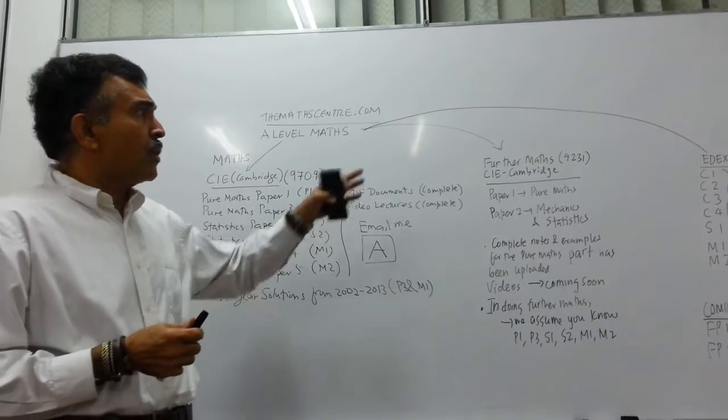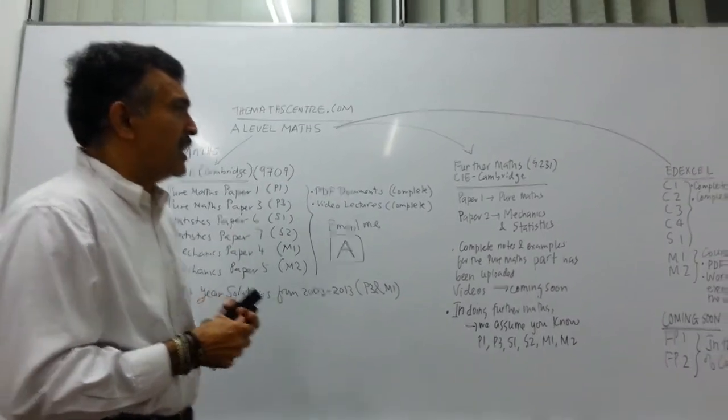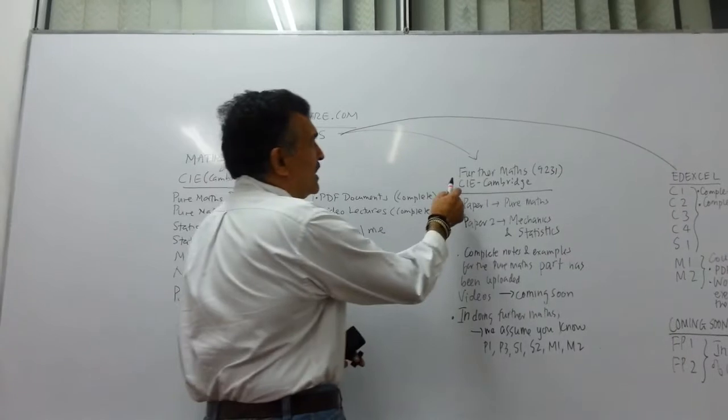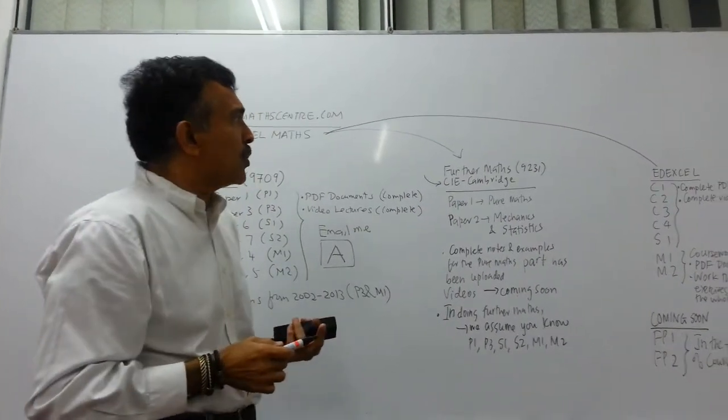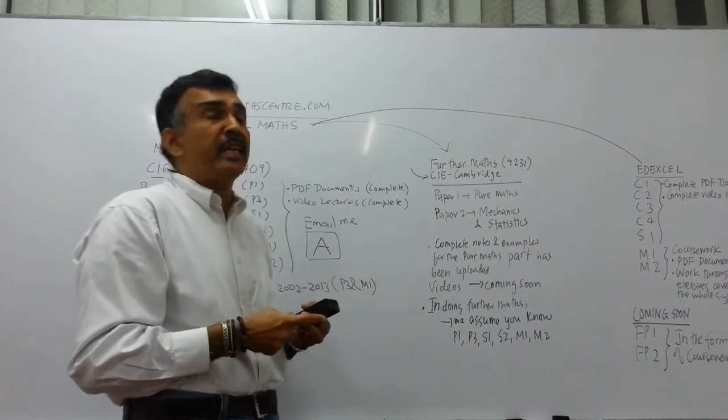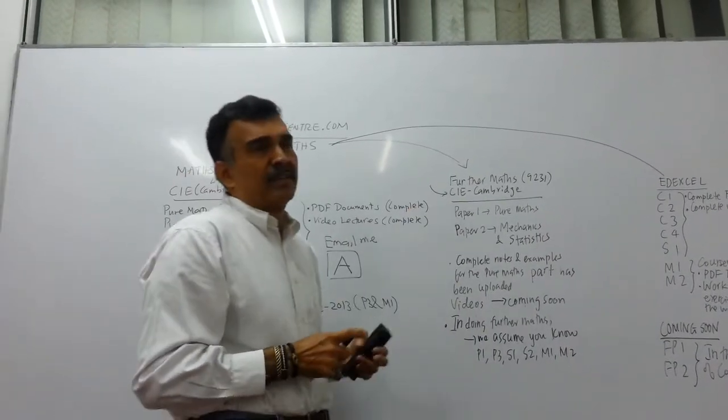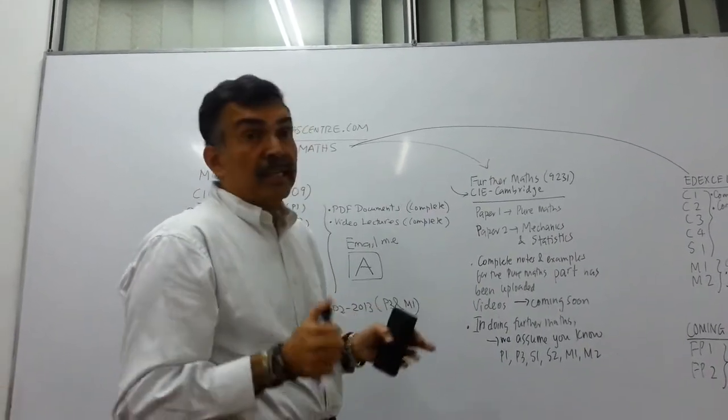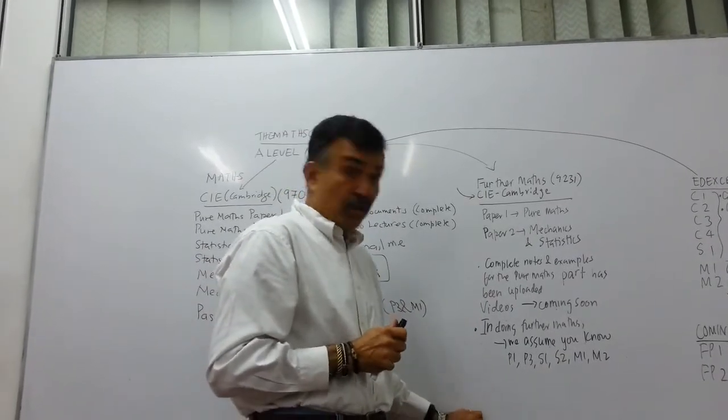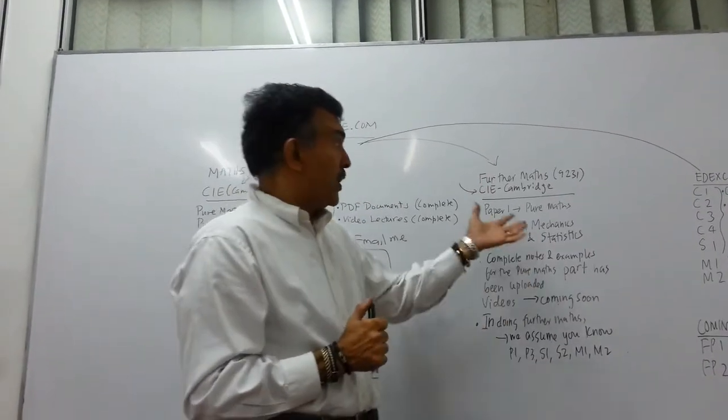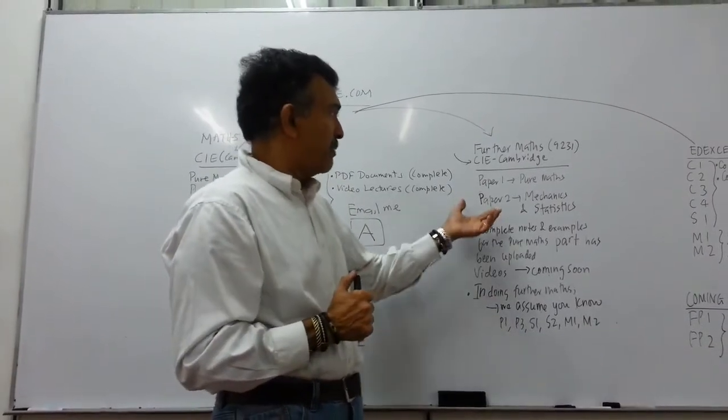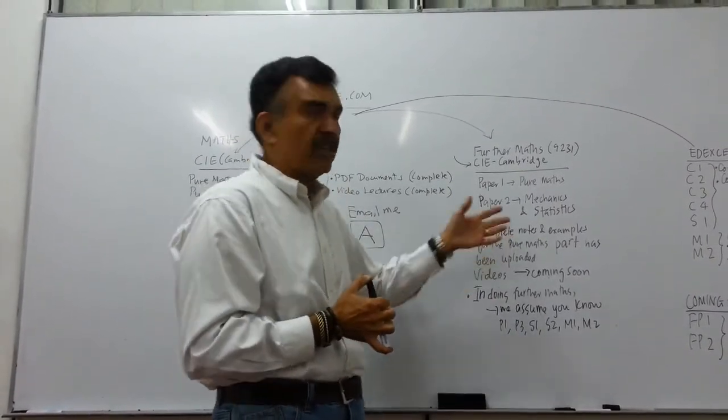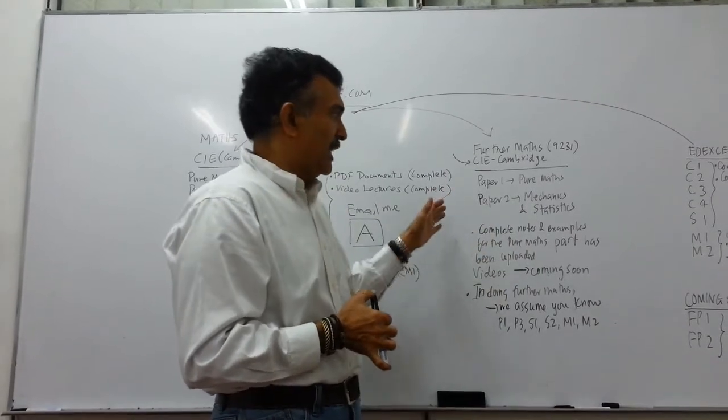Next, let's talk about further maths. Further maths. This is also the Cambridge exam, CIE. The subject code is 9231. Further maths. Now, further maths, you must be careful here. We have two papers. Paper 1 is all pure maths. And paper 2 has got both mechanics and statistics.